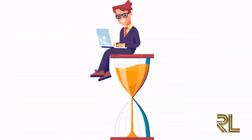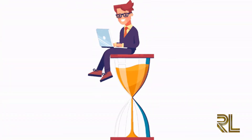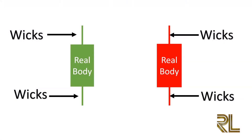For example, this is what a candlestick looks like. The thick portion is known as the real body, and the thin parts are known as the wicks. Now let's see what the real body and wicks can tell us about how market prices have moved.